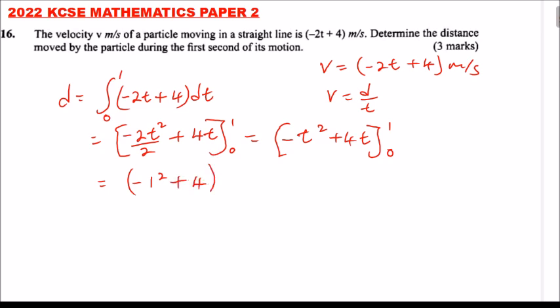When you substitute t=0, everything becomes zero. So this equals (-1 + 4) - 0, which equals 3 meters.